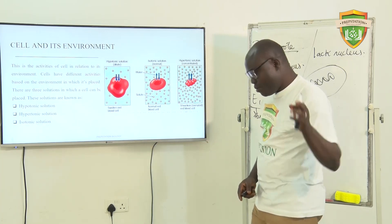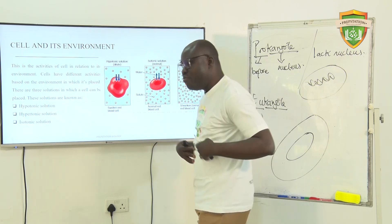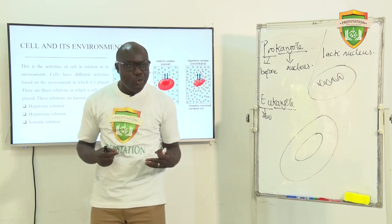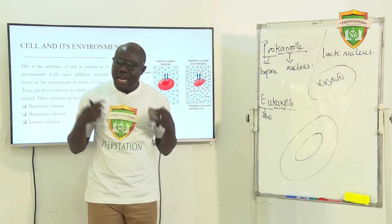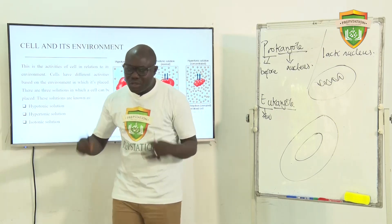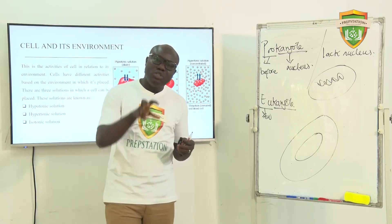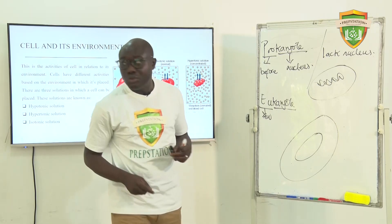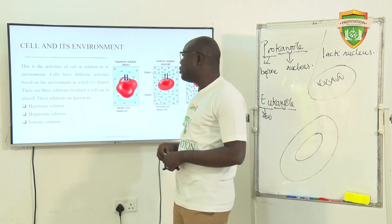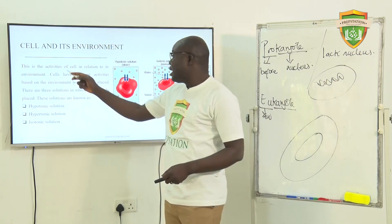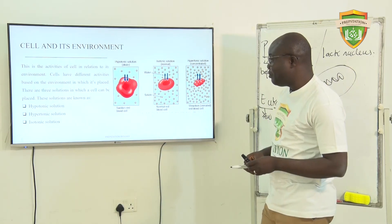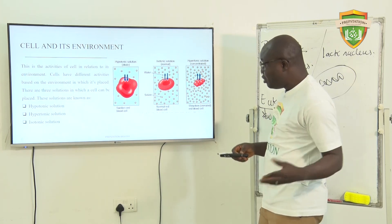Now, the cell and its environment. The way you react also depends on where you are. If you are in a class that is extremely cold, you start complaining or you reach for your hoodie because of the environment. The same thing happens to cells — cells react differently based on the environment in which they are found. These are the activities of cells in relation to their environment.